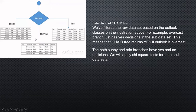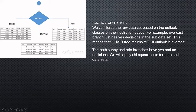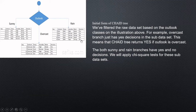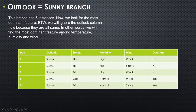With outlook as the root node, we look at the branches: what instances exist when outlook is sunny, when it is rain, and when it is overcast. For the overcast branch, all decisions are yes, so we don't need to decompose that node further. For sunny, sometimes yes and sometimes no occurs. For rain, both yes and no appear, so we need to determine which other attributes drive decisions for the sunny and rain branches.